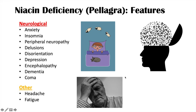The clinical features of pellagra are the four Ds — diarrhea, dermatitis, dementia, and death — affecting the gastrointestinal system, integumentary system, and neurological system.